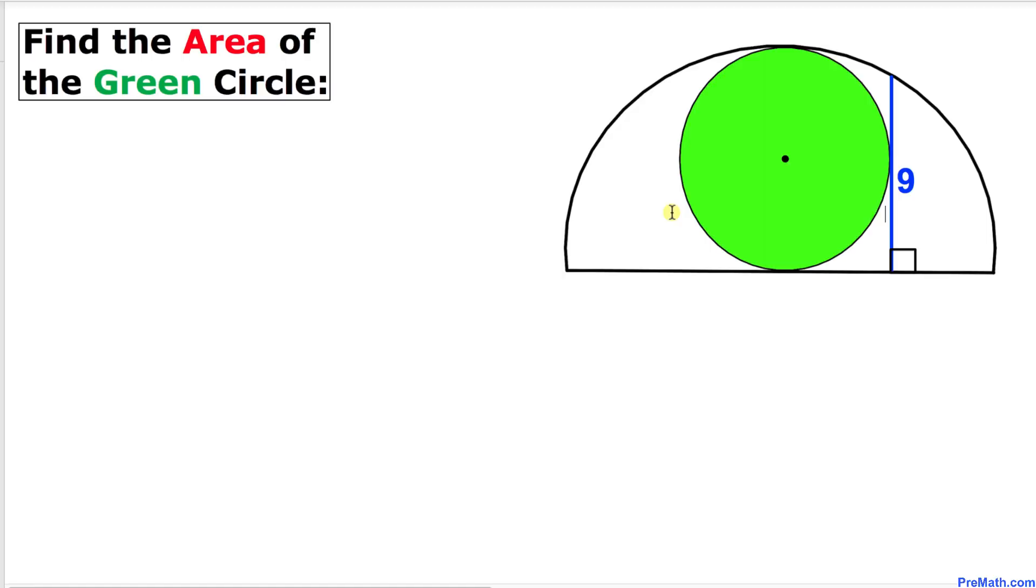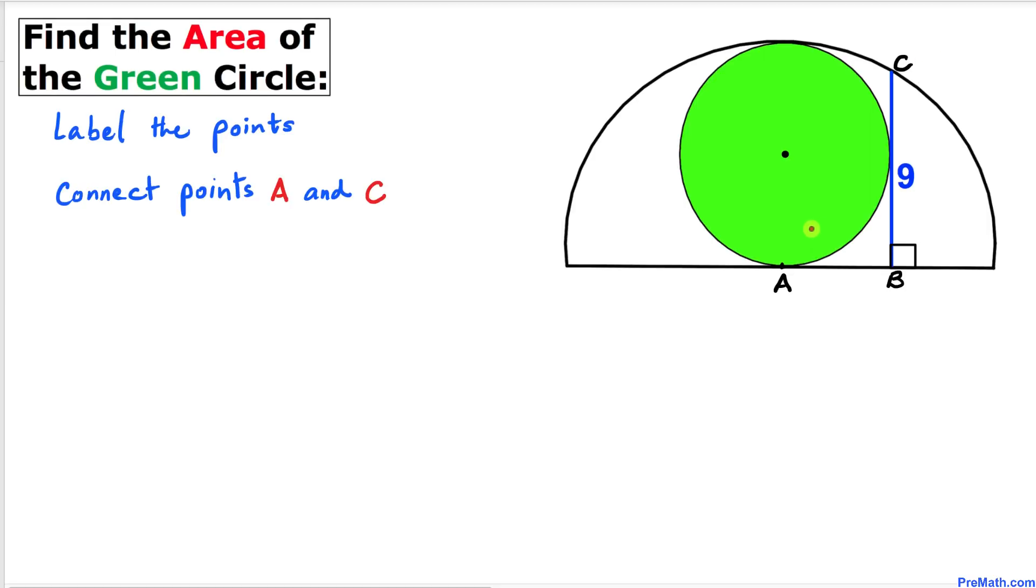Here's our first step. Let's go ahead and label the points. Here I have labeled points A, B, and C. Now let's go ahead and connect points A and C carefully, and here's our much nicer looking diagram.